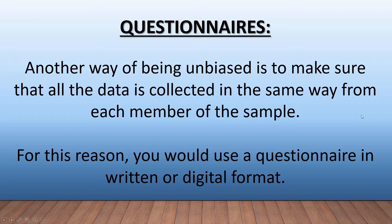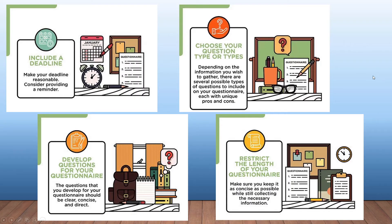Another way of being unbiased is to make sure that all the data is collected in the same way from each member of the sample. For this reason, you would use a questionnaire, which can be either in written or digital format. When you send someone a Google Form, everybody is going to complete it in the same manner. When it comes to questionnaires, you also want to look at guidelines: choose your question type or types, include a deadline, develop the questions thoughtfully, be clear and concise, and restrict the length of your questionnaire. There's nothing worse than a questionnaire with three or four pages of questions — nobody wants to do that.